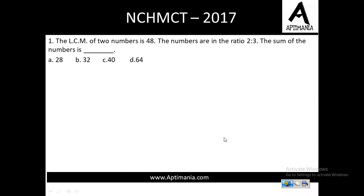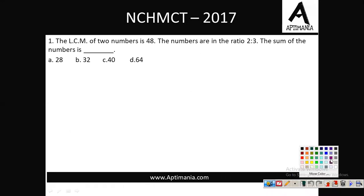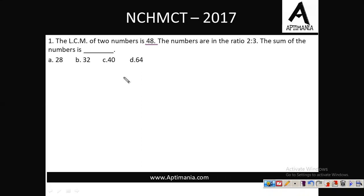The LCM of 2 numbers is 48 and the numbers are in the ratio 2:3. We need to find the sum of the numbers. The LCM is given as 48 and the numbers are in the ratio 2:3, so I am assuming the first number to be 2x and the second number to be 3x.